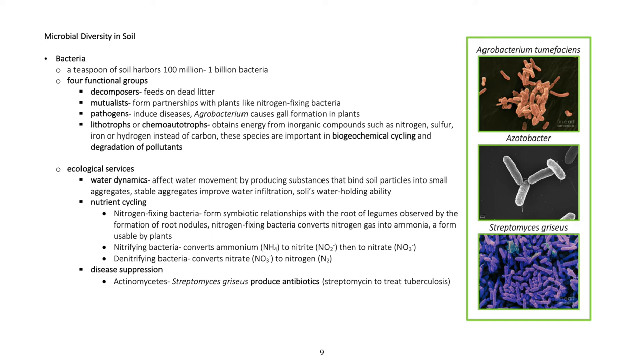Nitrogen cycling. Nitrogen-fixing bacteria form symbiotic relationships with the root of legumes, observed by the formation of root nodules. Nitrogen-fixing bacteria convert nitrogen gas into ammonia, a form usable by plants.